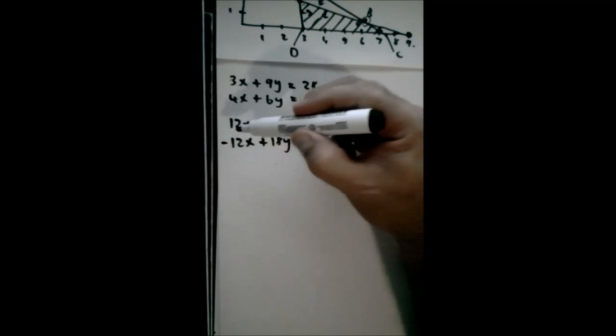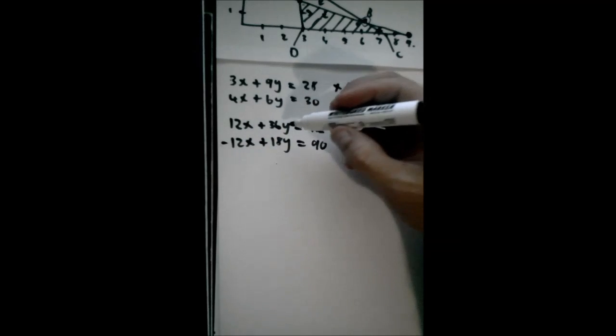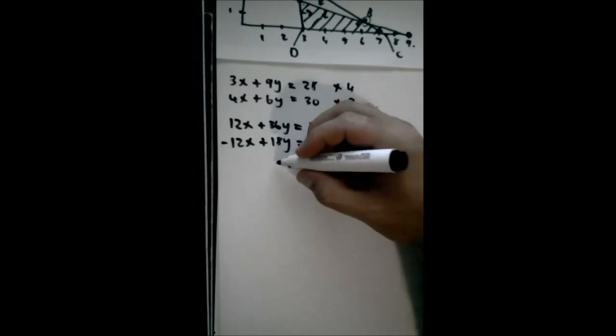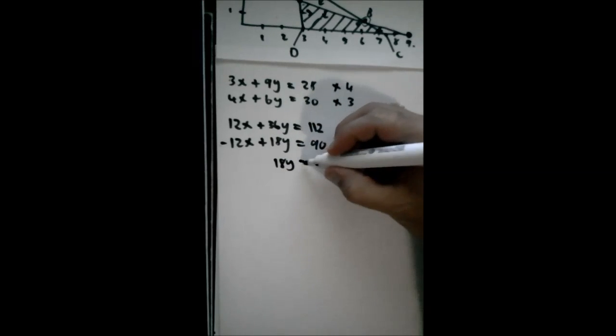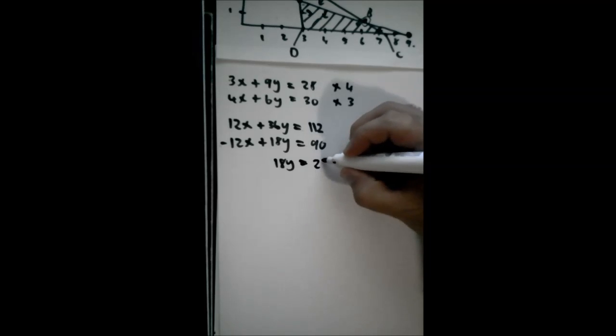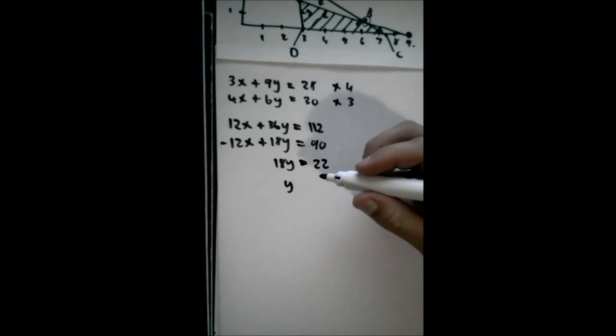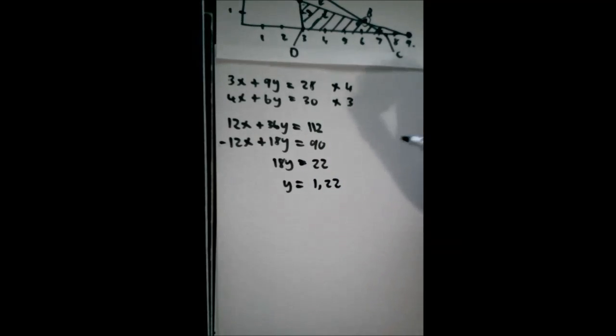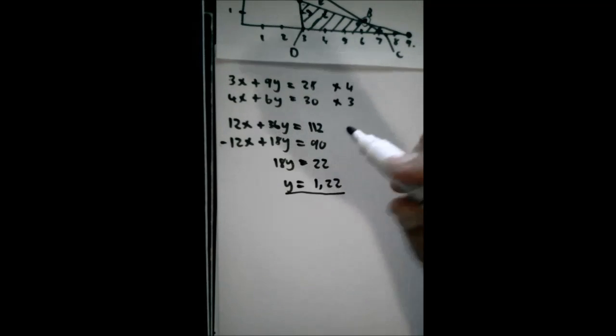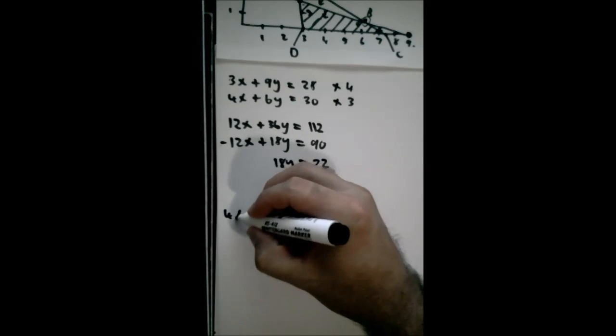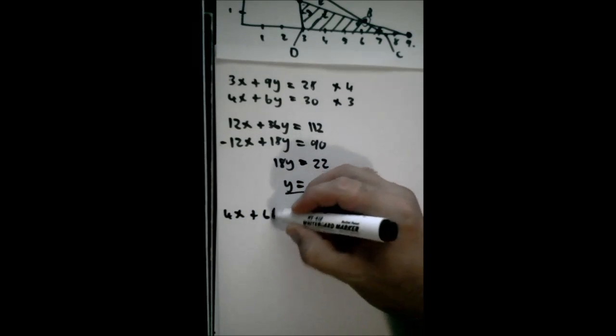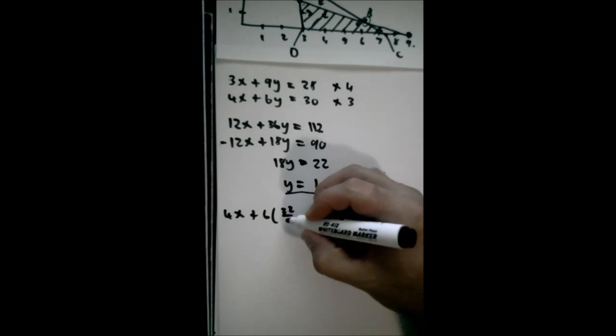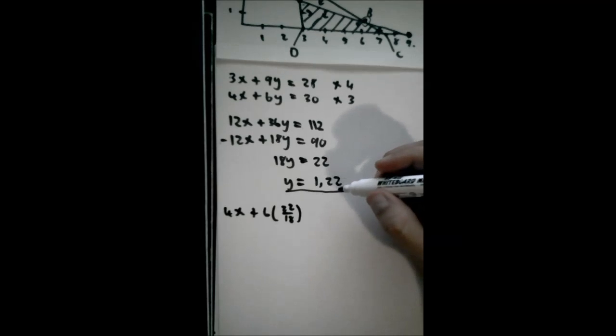Now, I want to subtract the bottom one from the top. 12x minus 12x is nothing. 36y minus 18y will give us 18y. And then 112 minus 90 gives us 22. So therefore, the y coordinate, the new y coordinate now, is 1.22 recurring.